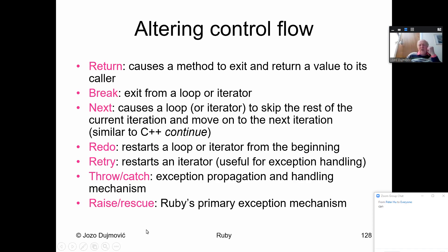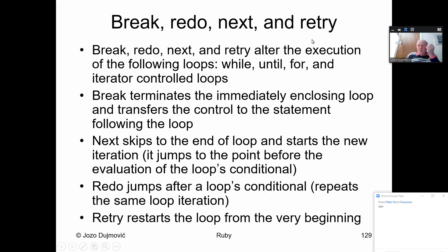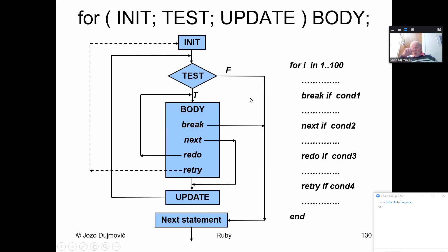Altering control flow was covered earlier with return, break, next, redo, and retry in procedural programming. There is also throw/catch and raise/rescue for exception handling. In a for loop there are five destinations: initialization, test, body, update, and next statement. Break jumps to the next statement after the loop. Next jumps to the update step. Redo jumps to the beginning of the body. Retry jumps to the very beginning. You can write: break if condition, next if condition, redo if condition.